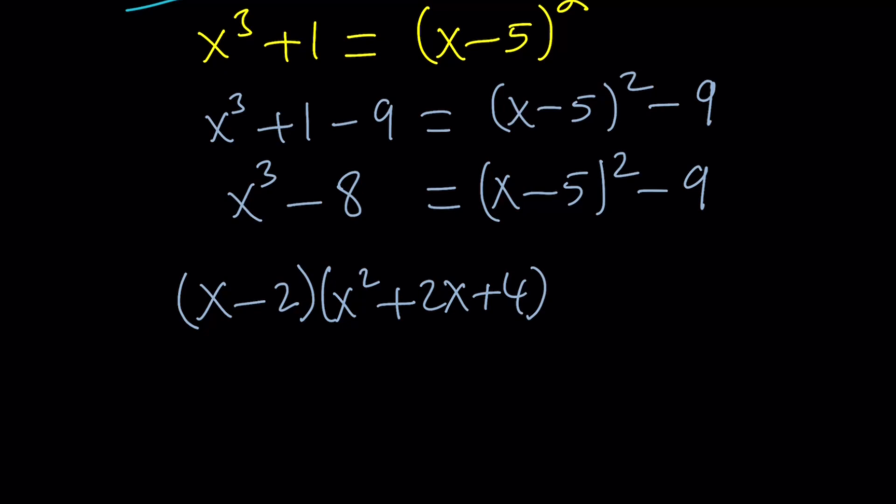And the right hand side is going to be as follows. This is 3 squared, so I can write it as x minus 5 plus 3 and x minus 5 minus 3. You get the idea? And guess what? This is going to be x minus 2 and we're going to have a common factor.